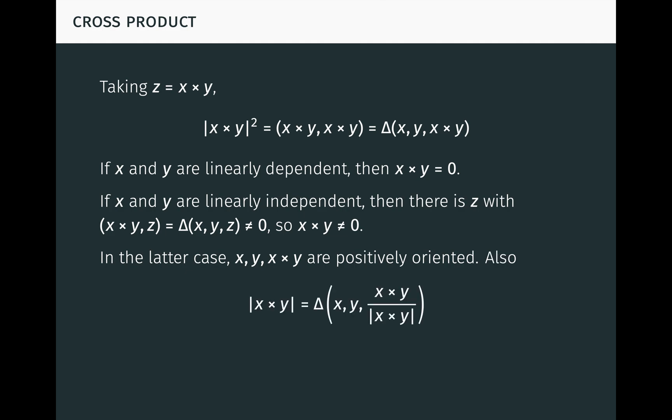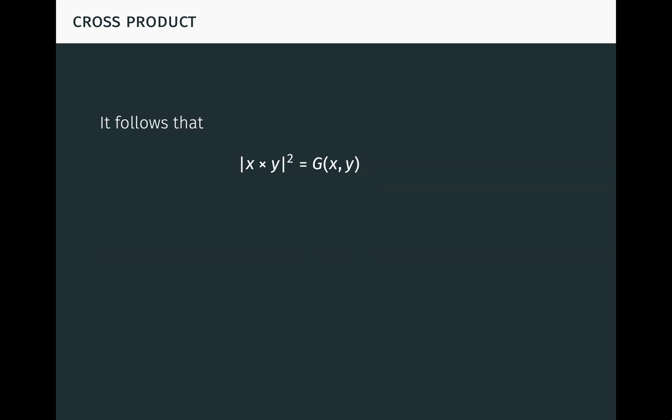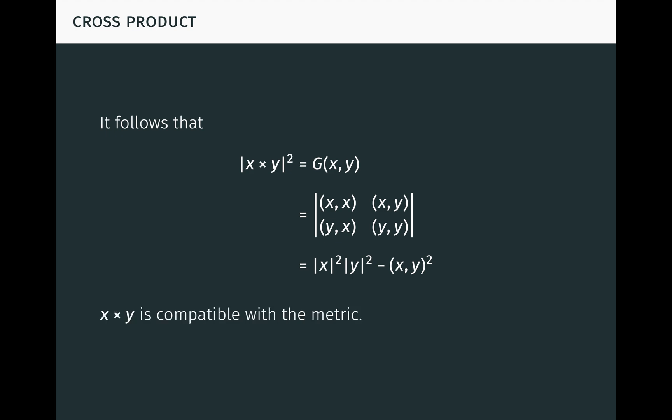Also, if we divide both sides of the equation by the norm of x cross y, we see that the norm of x cross y equals delta of x, y, and the vector x cross y over the norm of x cross y. But that last vector is a unit vector orthogonal to x and y, and delta measures volume. So this is just the area of the parallelogram formed by x and y. If you saw my last video on the Gramian, you'll know it follows from this that the norm of x cross y squared equals the Gramian of x and y, which by definition is the 2 by 2 determinant of inner products seen here. We describe the connection between x cross y and the inner product x times y by saying that x cross y is compatible with the metric.